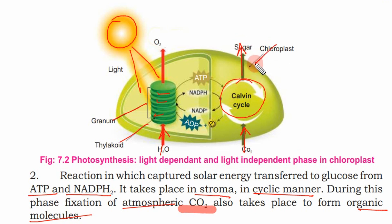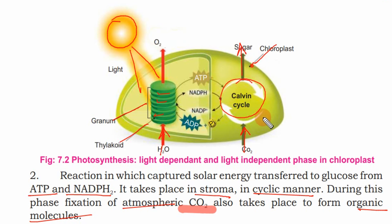This is the chloroplast, showing the whole process of photosynthesis. You can see ADP plus phosphate being converted to ATP. The Calvin cycle is also shown here, illustrating how energy is cycled through the system.